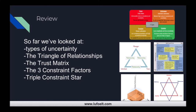Let's review some of the concepts we've looked at so far. We've looked at the four different types of uncertainty, the triangle of relationships between manager, team, and individual, the trust matrix for building healthy working relationships, and the three constraint factors of budget, schedule, and quality.